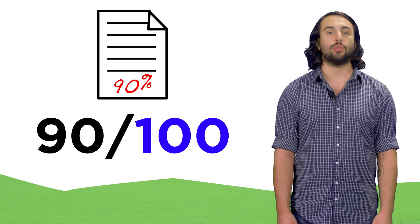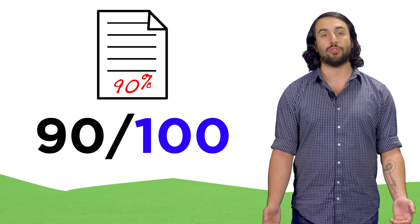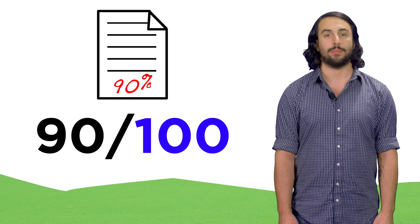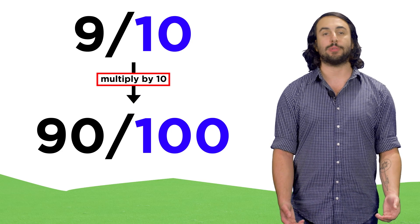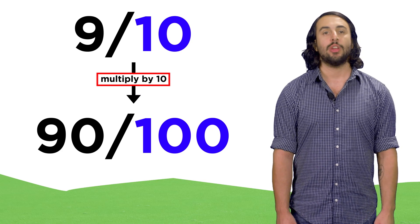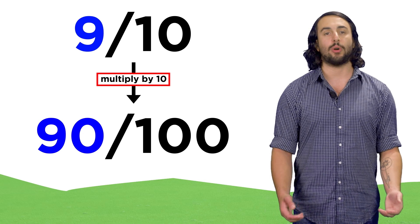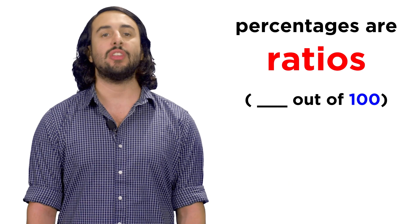Whatever we have to do to the larger number to make it one hundred, we do that same thing to the other number. Ten must be multiplied by ten to get a hundred, so the nine is also multiplied by ten.